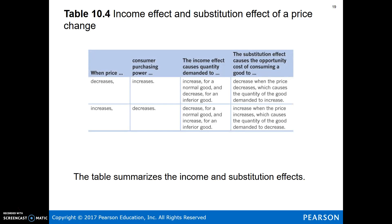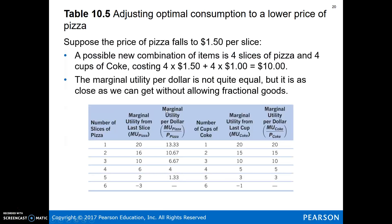Here is a summary of the income and substitution effects — you need to be very familiar with this and be able to work through the logic. Here's an example of the price of pizza falling to $1.50 per slice. You should work through this just like we did before. Assume a $10 budget and figure out the optimal consumption bundle — how much pizza and Coke should you consume — by equalizing marginal utility per dollar spent.